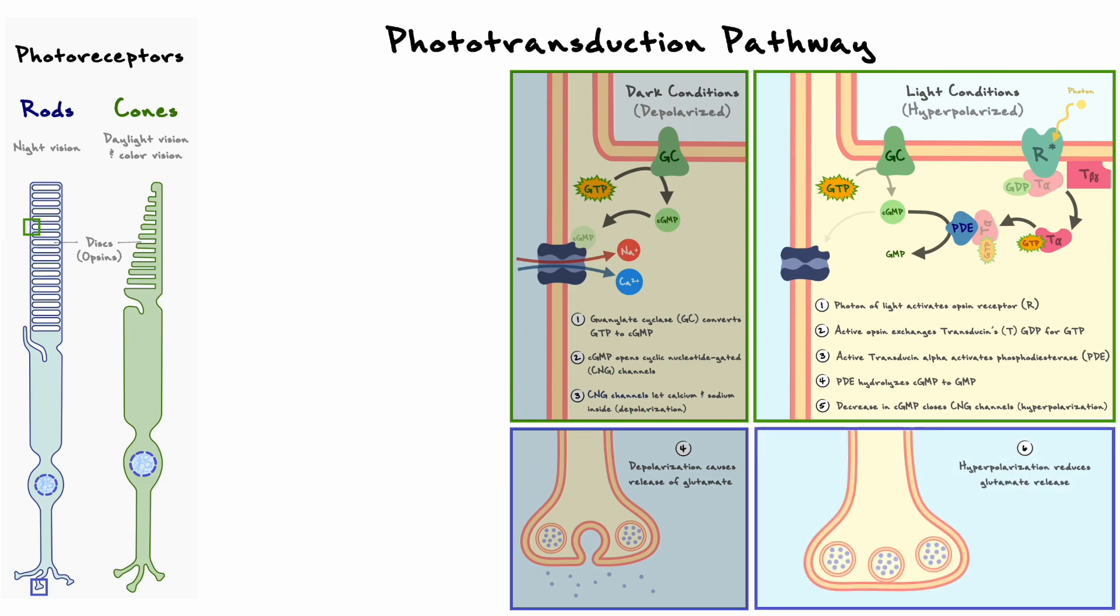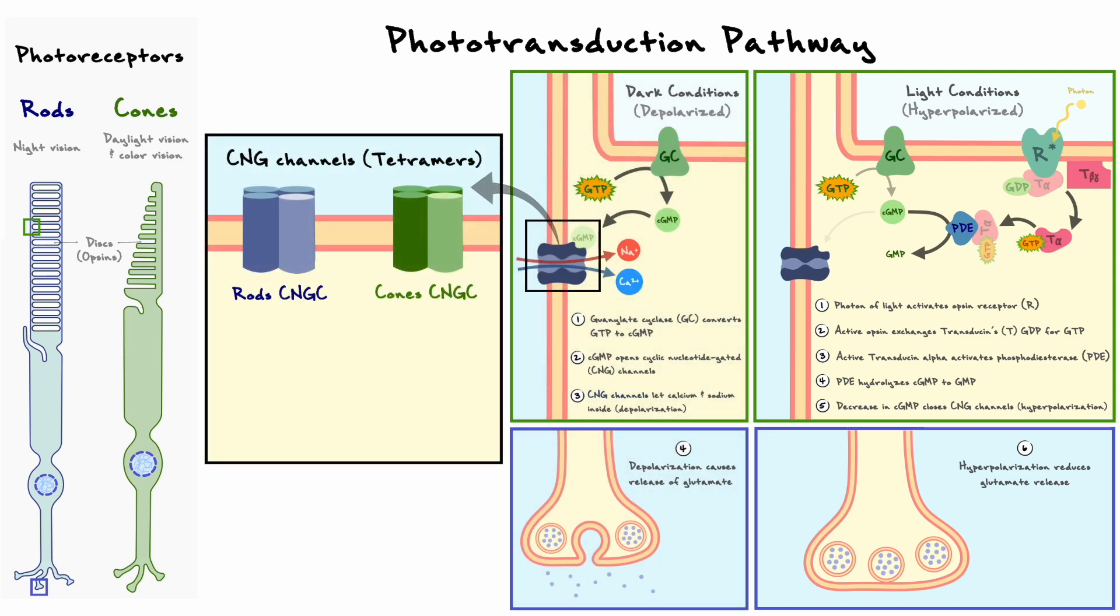Now that we understand this pathway, we can shift our focus on CNG channels and learn how mutations in their structure might interfere with this process and cause vision impairments. An important detail to mention is that CNG channels in rods and cones molecularly differ. The CNG tetramer in the rods is composed of three CNGA1 subunits and one CNGB1 subunit, whereas the CNG channels in the cones are made of three CNGA3 subunits and one CNGB3 subunit. This detail implies that CNG channel mutations can selectively impair either rods or cones.